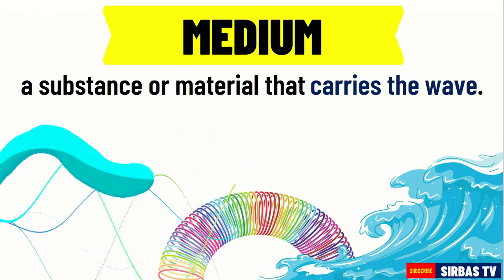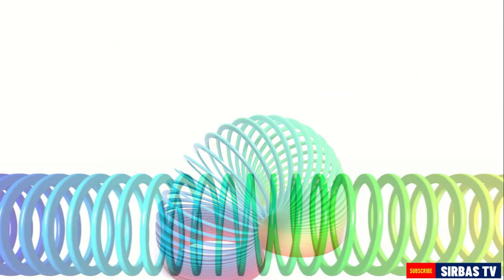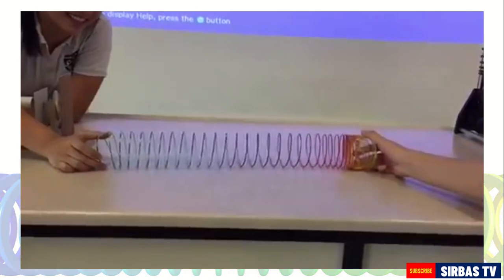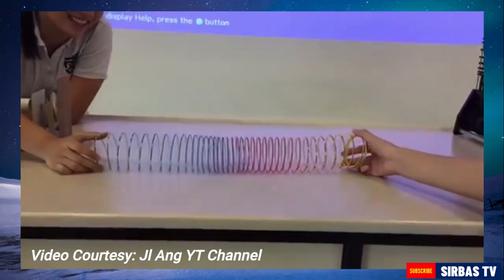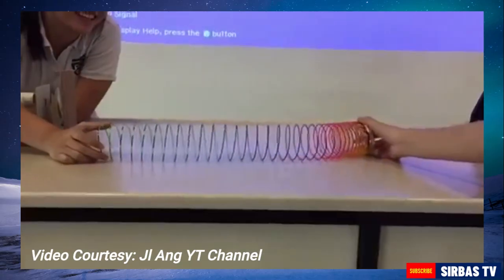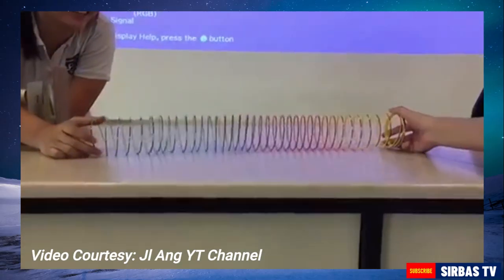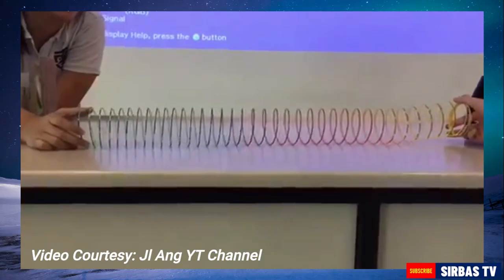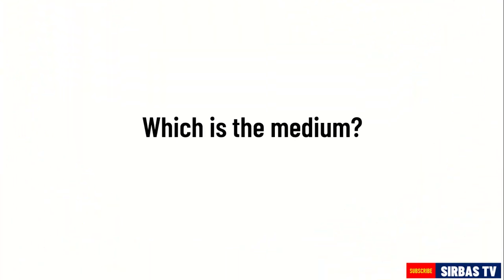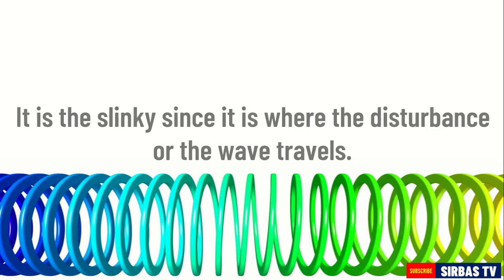Take a look at this slinky. If we stretch it, it will assume an equilibrium or rest position — it is not moving. However, when the first coil of the slinky is repeatedly moved from left to right, it will start to move. This creates a disturbance that travels from one end of the slinky to the other. The slinky is the medium, since it is where the disturbance or the wave travels.